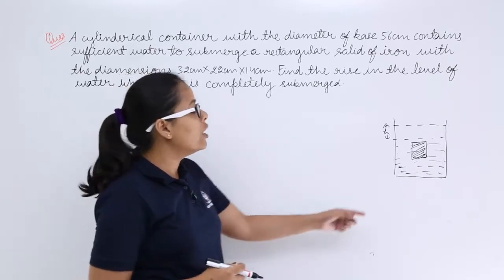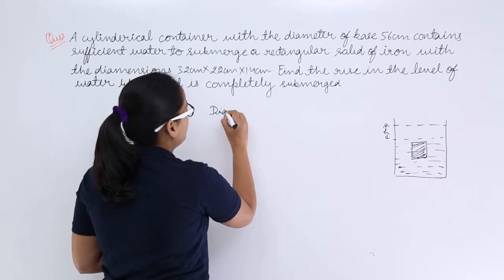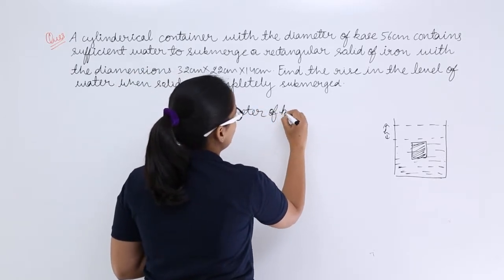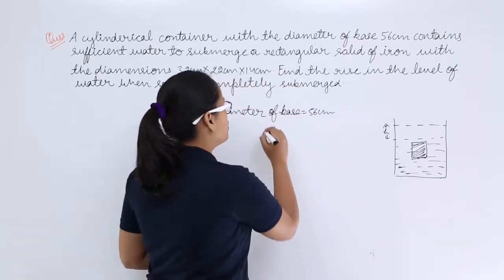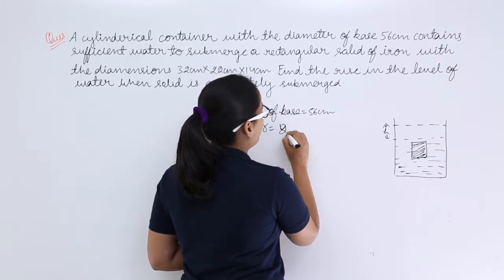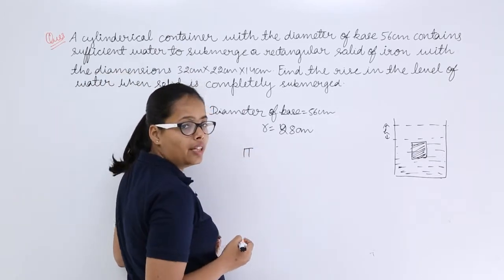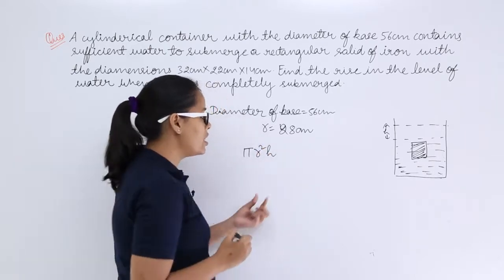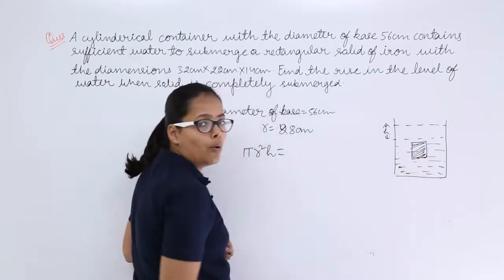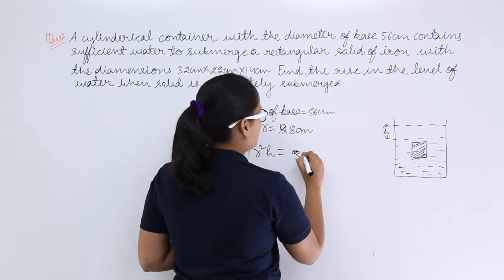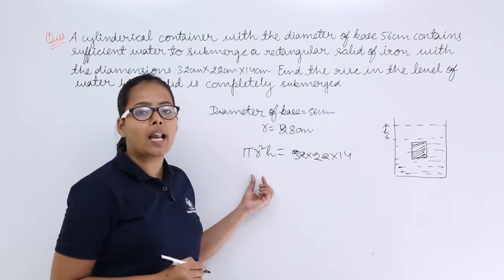The diameter of the base of the cylindrical container is 56 centimeters, so the radius will be half of that, which is 28 centimeters. Now let's calculate the rise in the water. The volume of water rise equals pi r squared h, where h is the height of the rise in water level. This is equated to the volume of the cuboid: length times breadth times height, which is 32 times 22 times 42. That's how we calculate the rise in water.